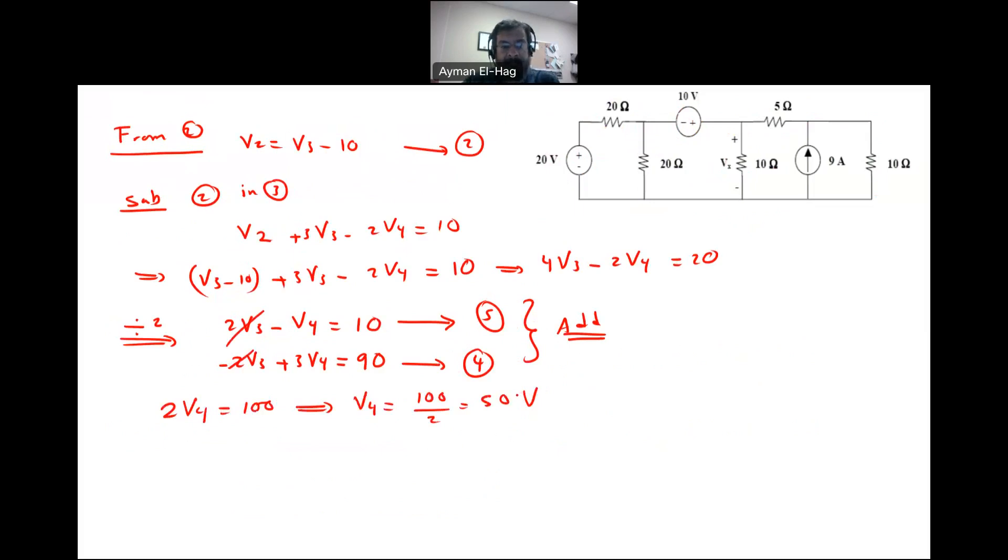Now we need to find your V3, so we can substitute in any of these two equations. So substitute V4 in 5. Now equation 5 says that 2V3 minus V4 equal to 10, or 2V3 equal to 10 plus V4. V4 is 50, so this is equal to 10 plus 50, which is equal to 60. So it means that your V3 is equal to 30, 30 volts. And from this we can find V2 as well. Your V2 is equal to V3 minus 10, which is equal to 30 minus 10, which is equal to 20 volts.